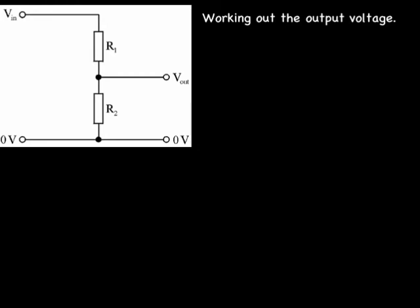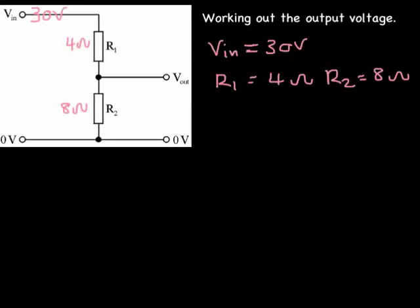We can calculate Vout by using ratios. In this example, our voltage in is equal to 30V, and our R1 is equal to 4 ohms, and our R2 is equal to 8 ohms. So R2 has twice the resistance as R1. This means it's going to get twice the share of the voltage. So if we have 30 volts going into the circuit, then R1 will get a third of that 30 volts, which is 10 volts, and R2 will get twice its share, which is 20 volts.